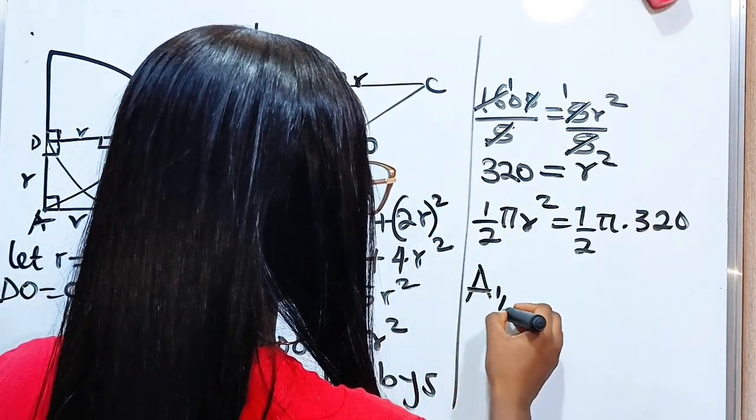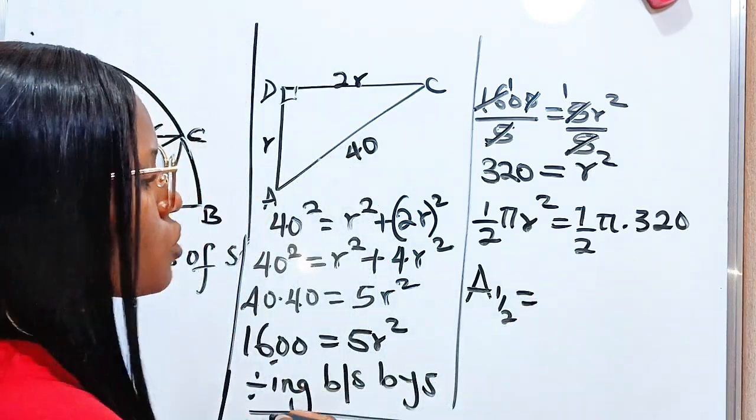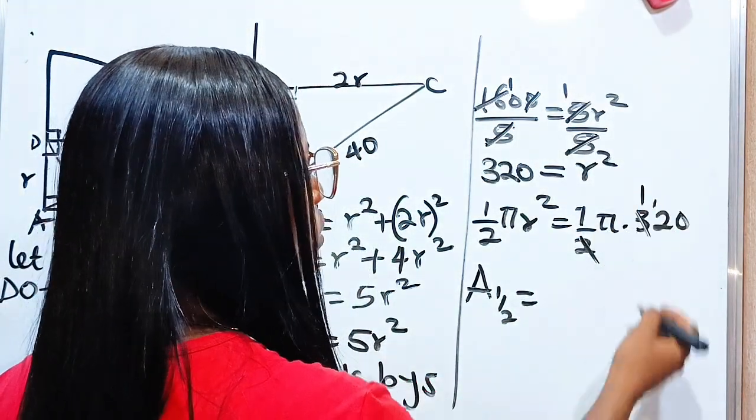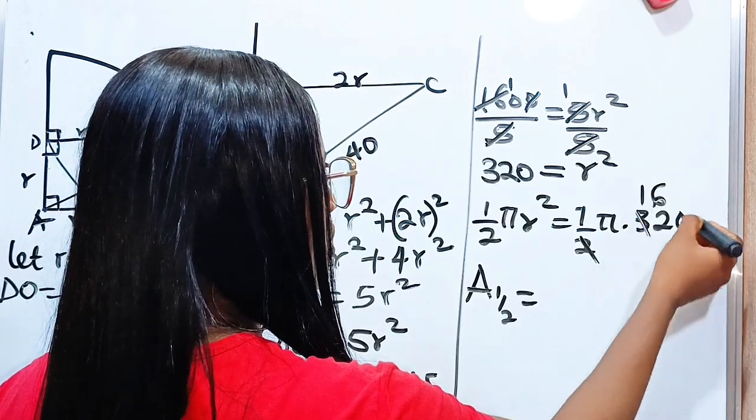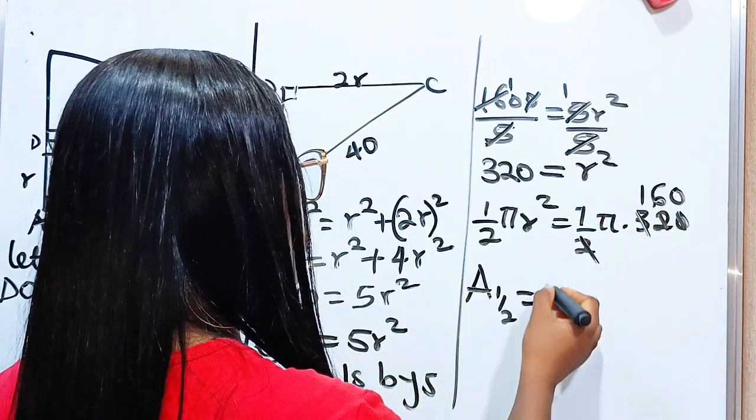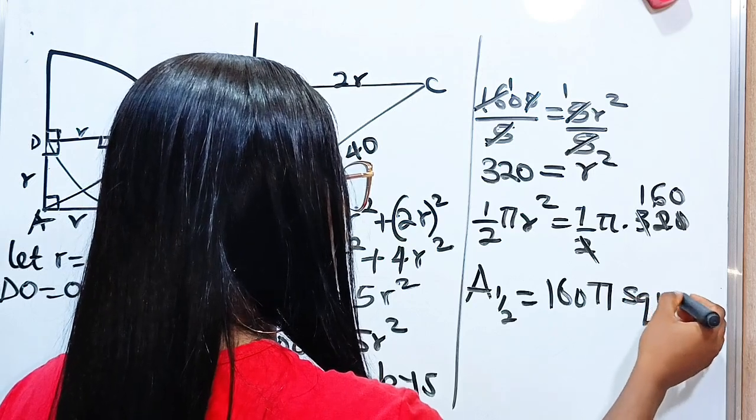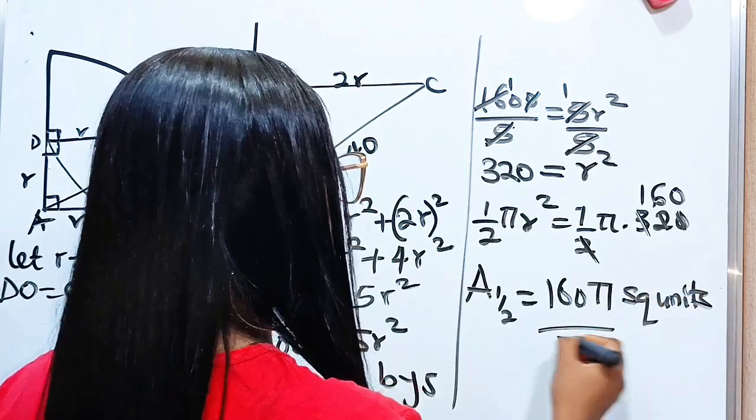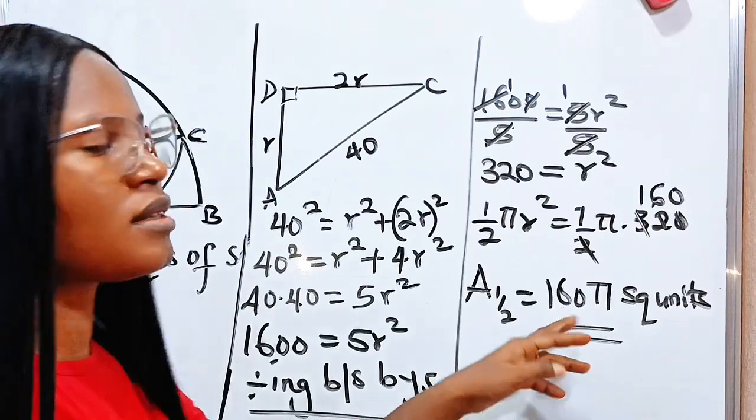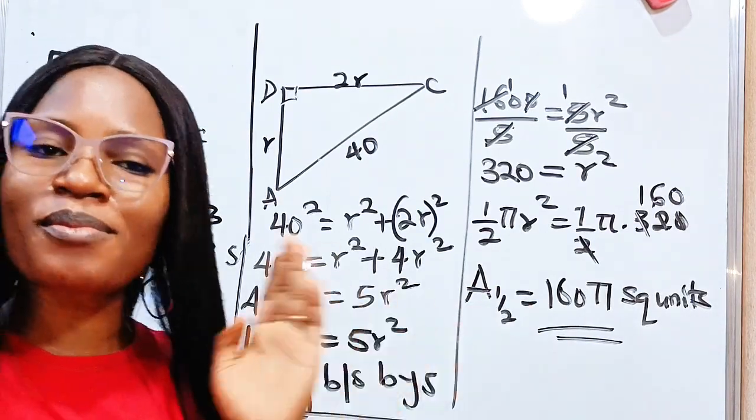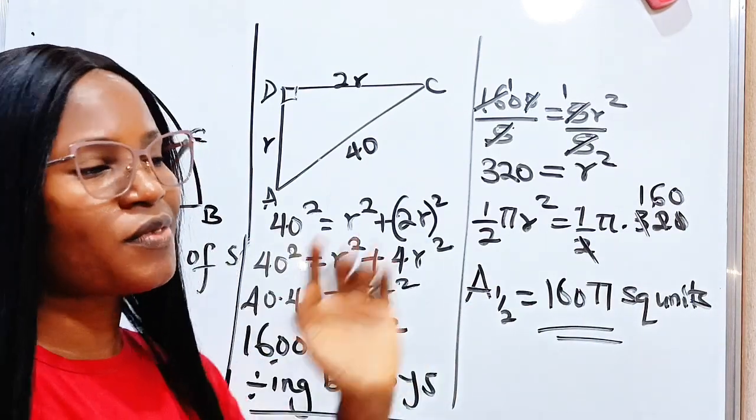So the area of the semicircle equals 160π square units. That is the value. You can use your calculator to get this in decimal, not in terms of π. Thank you so much for watching. See you in my next video.